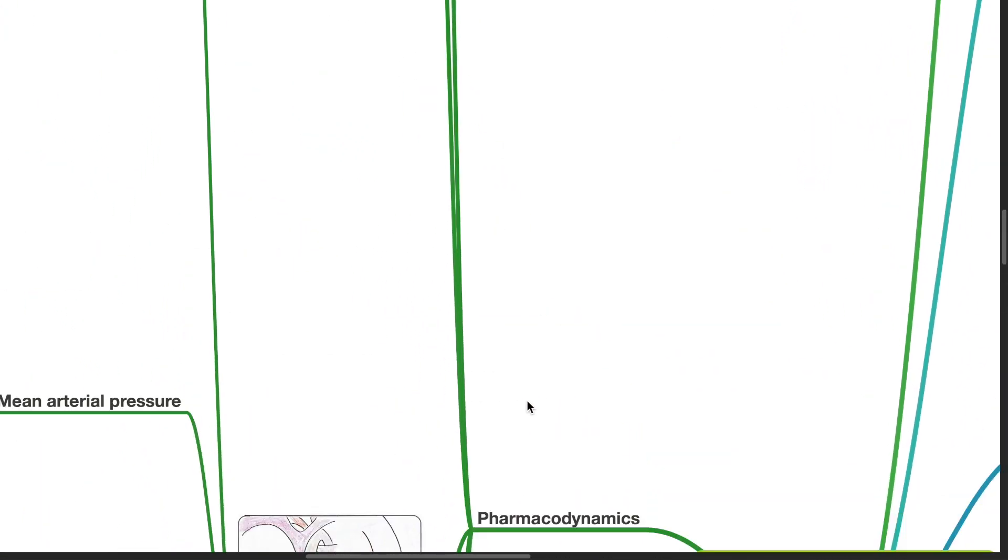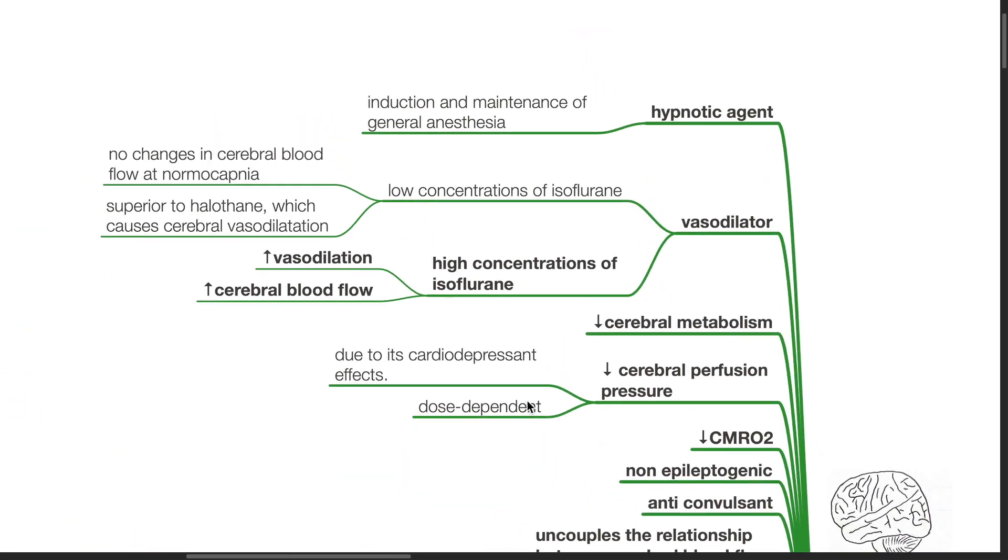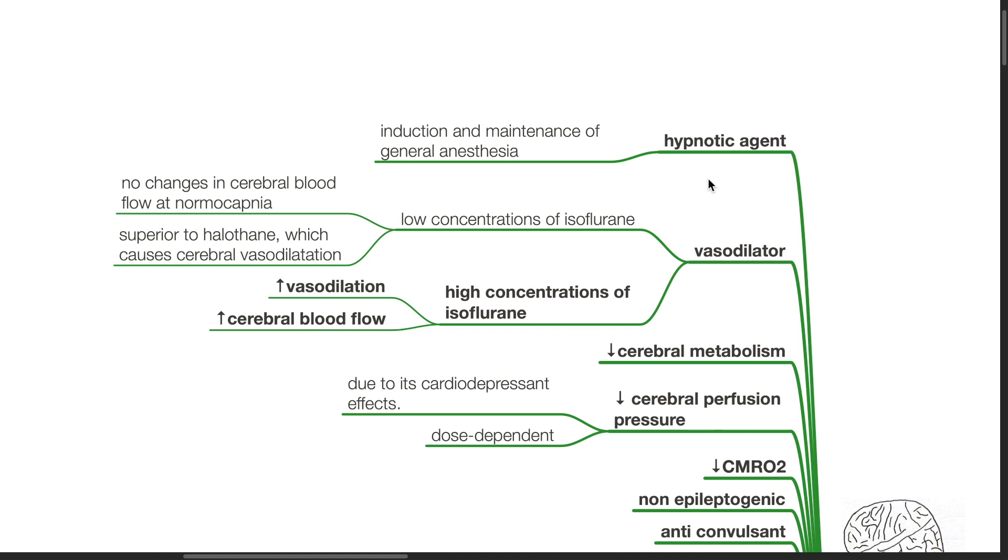Pharmacodynamics. Central nervous system. Isoflurane is a hypnotic agent for induction and maintenance of general anesthesia. It has vasodilatory effects. At low concentrations of isoflurane, there are no changes in cerebral blood flow and normal CAP CO2. It is superior to halothane, which causes cerebral vasodilation.